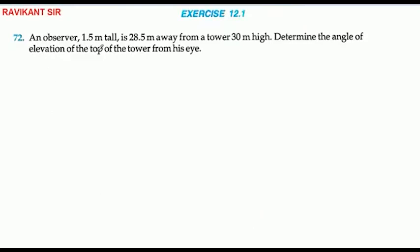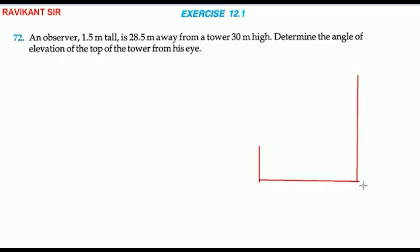An observer 1.5 meter tall is 28.5 meter away from a tower 30 meter in height. Determine the angle of elevation of the top of the tower from his eye.